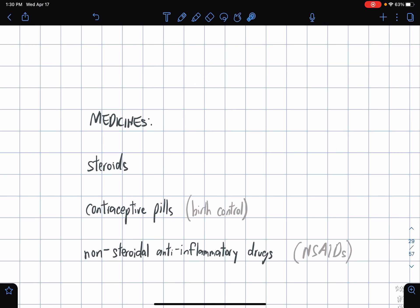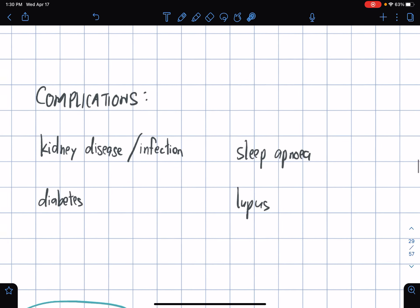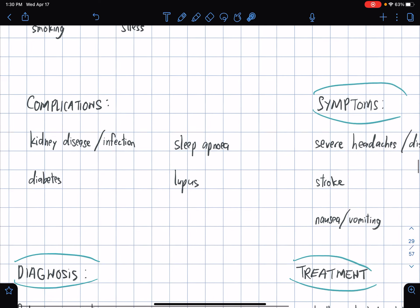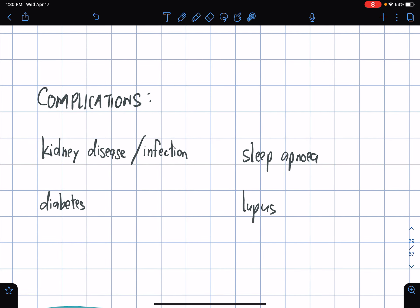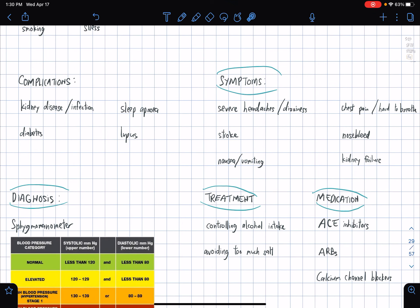What are the medicines? We have steroids, contraceptive pills intended for birth control, although this is not ethical in certain practices that are established on religious beliefs. We have non-steroidal anti-inflammatory drugs or NSAIDs.